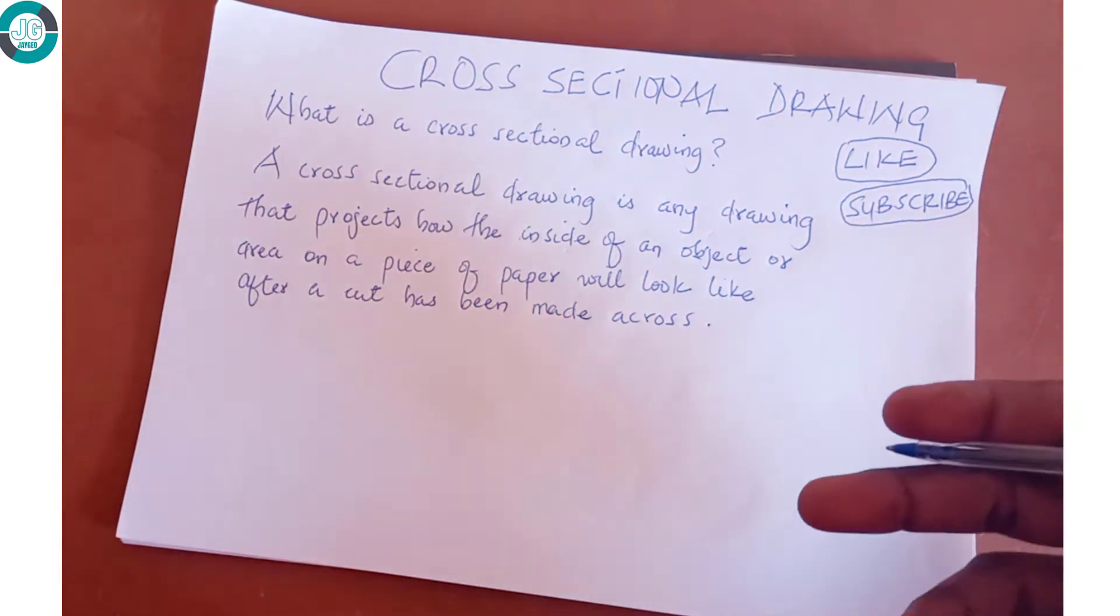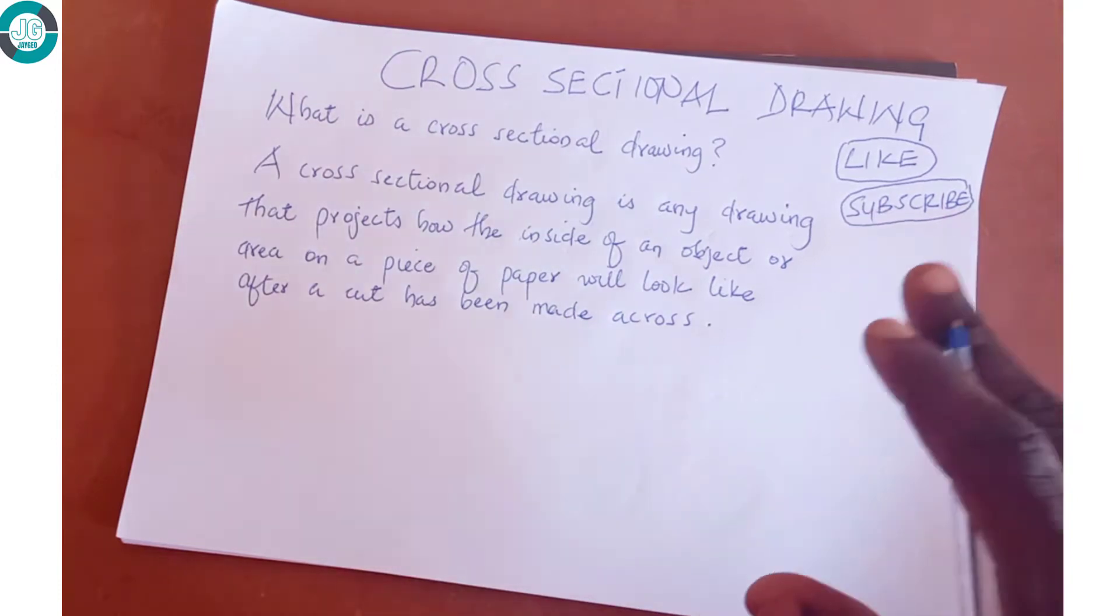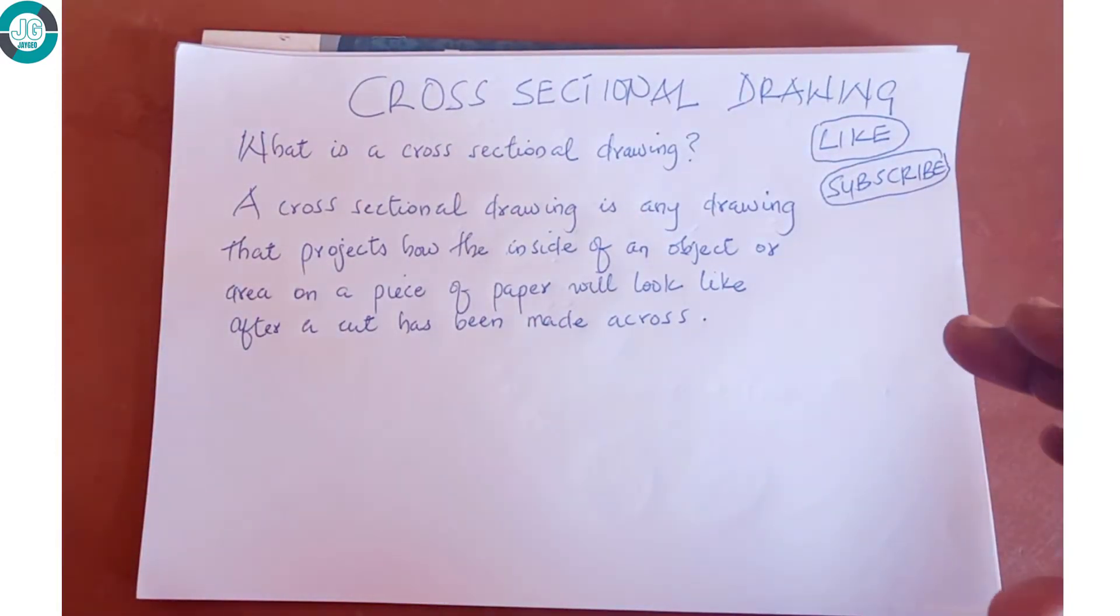What this means is that when you look at an object from the top, that is from the bird's eye view, you will only see the top part of the object. To see one full side of the object, a cut has to be made across it to project a full side of the object.